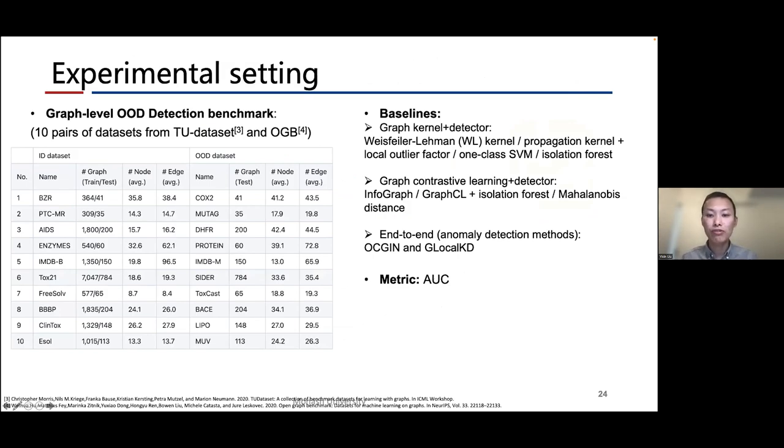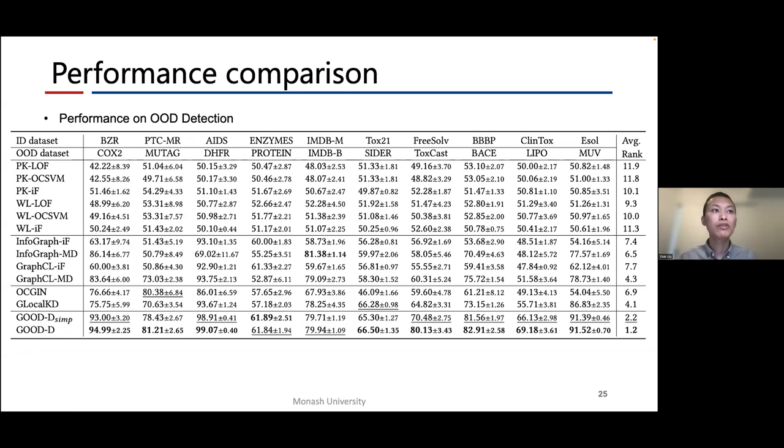For the experiment part, since we are the first to investigate the graph-level OOD detection problem, we construct a benchmark by collecting 10 pairs of datasets from the TU datasets and OGB dataset, which are commonly used graph-level datasets. For comparison, we consider three types of baselines: graph kernel-based detectors, graph contrastive learning-based detectors, and end-to-end methods. We use AUC value to evaluate the performance of the models. Here are the experiment results on our benchmark. We can observe that our proposed method outperforms all baselines on a group of datasets and achieves runner-up performance on the rest of the datasets. We also find that the simple version without the adaptive mechanism can achieve very competitive results.